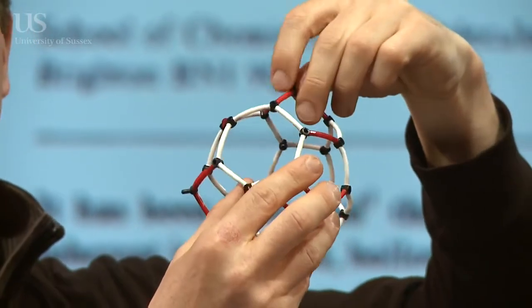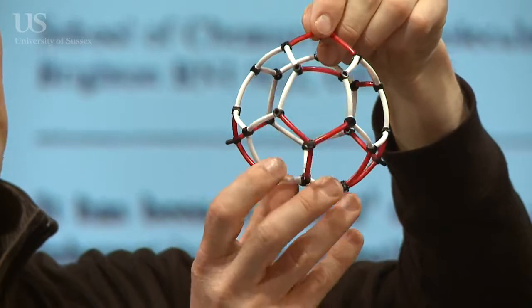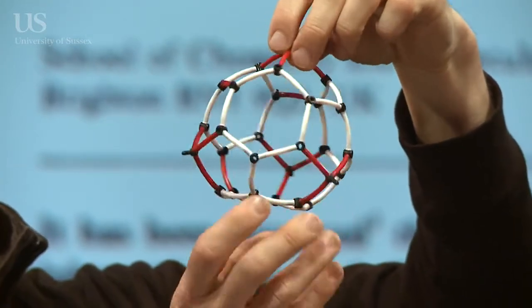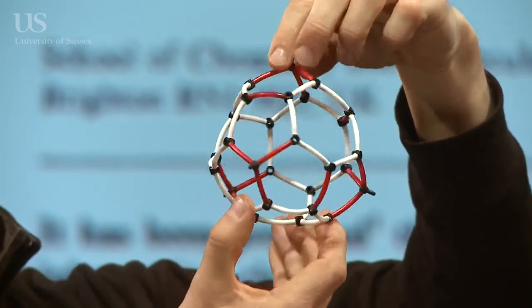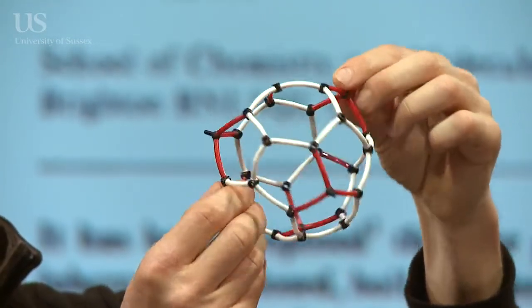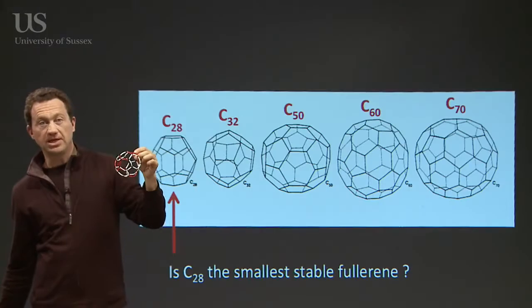It has what's called a tetrahedral shape. These four sets of three pentagons are arranged in this beautiful tetrahedral structure. I'm going to show you more about the structures in a minute.